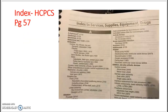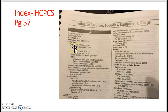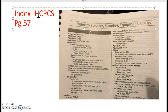We now come to the index page, which is page 57. The index page is important because we are trying to find a main term. A main term is the word we use to help locate the code in any coding manual. The index starts with A — words like abdominal pad, abduction, ablation, adapter, and more. Remember, HICPACS coding covers medical supplies, services, equipment, and drugs — those are your main terms.